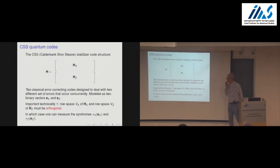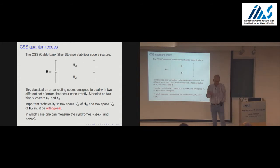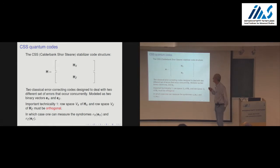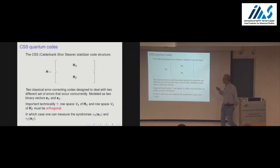Minimal distance is best thought of as the smallest weight of a non-detectable error. Now, quantum codes: I'll be talking about CSS quantum codes — for Calderbank, Shor, Steane. They're not the most general family of quantum codes, but they're the ones we'll be talking about.